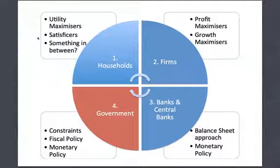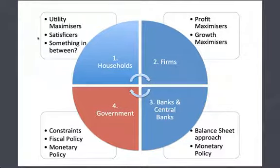What we're looking at really in this course is a microeconomic description of the firm that we're going to knit together to make a macroeconomic description of the entire economy. First off we looked at households as utility maximizers, boundedly rational satisfizers, or something in between. We looked at firms as profit maximizers and growth maximizers, banks and central banks. We've particularly looked at monetary policy but also the balance sheet approach. And now we're going to look at the government, particularly the constraints that it has and its implementation and its effects on fiscal and monetary policy.